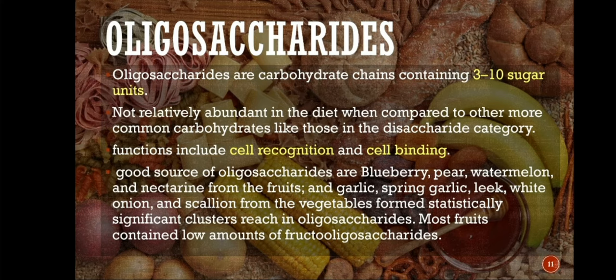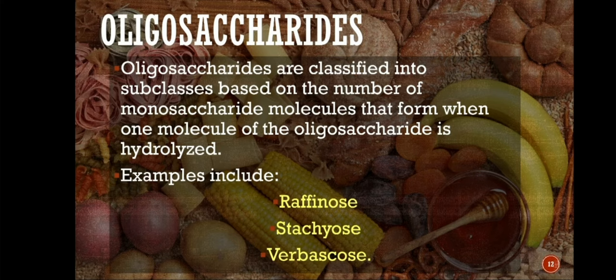Most fruits contain low amounts of fructooligosaccharides. Oligosaccharides are classified into subclasses based on the number of monosaccharide molecules that form when one molecule of the oligosaccharide is hydrolyzed. Examples include raffinose, stachyose, and verbascose.